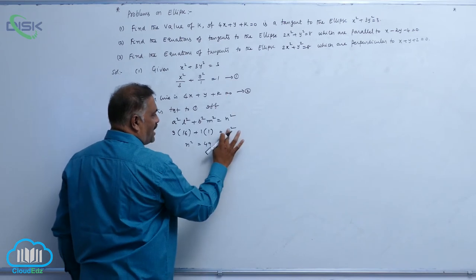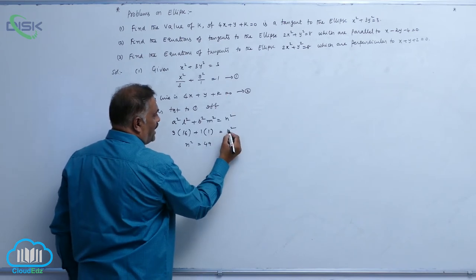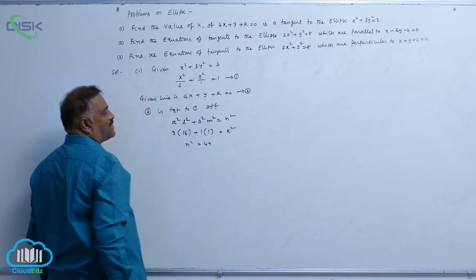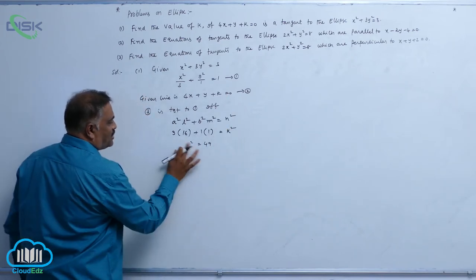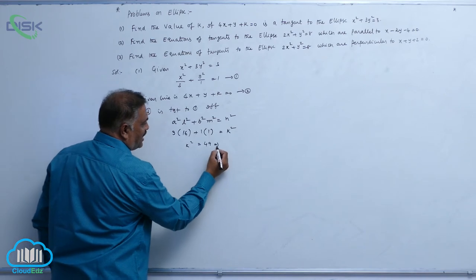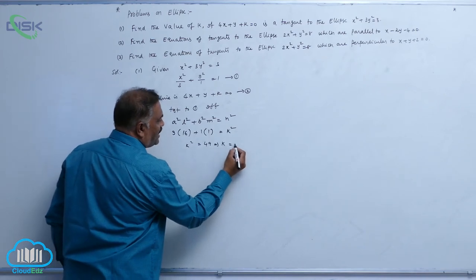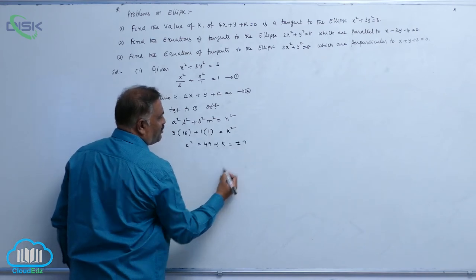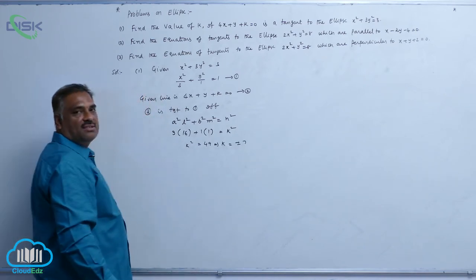In place of n we have k, so k squared equals 49, which means k is equal to plus or minus 7.